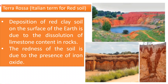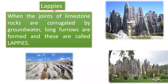Terra rosa: In Italy, the term 'terra rosa' means red soil. The deposition of red clay soil on the surface of the earth is due to the dissolution of limestone content in rocks, and the redness of the soil is due to the presence of iron oxide. Lapis: When the joints of limestone rocks are corroded by groundwater, long furrows are formed — these are called lapis. The joints get eroded rapidly and these long furrows form in the joints, giving this structure called lapis.